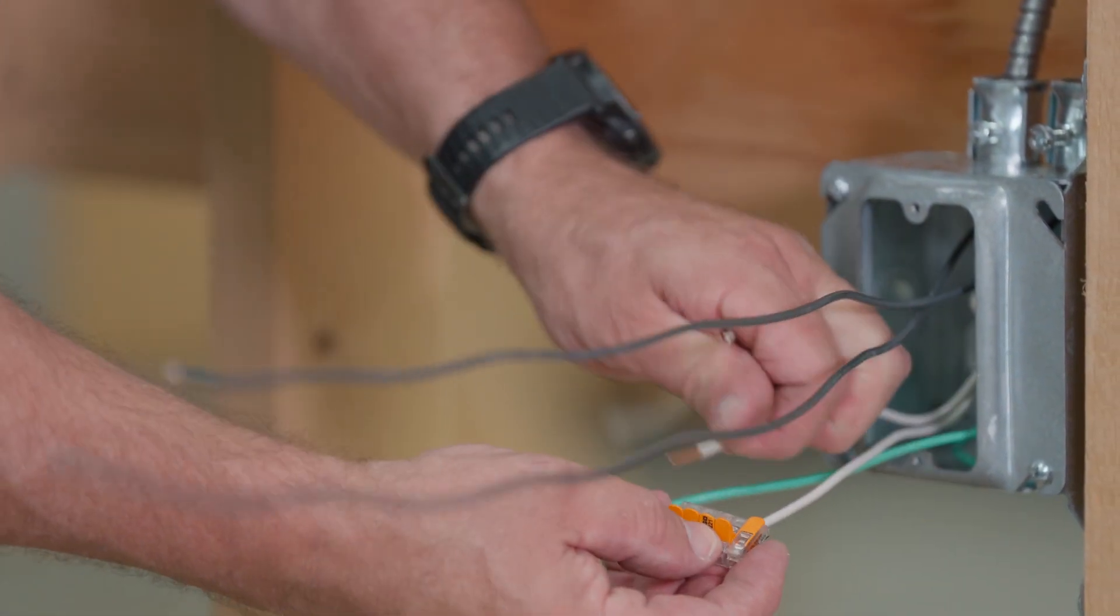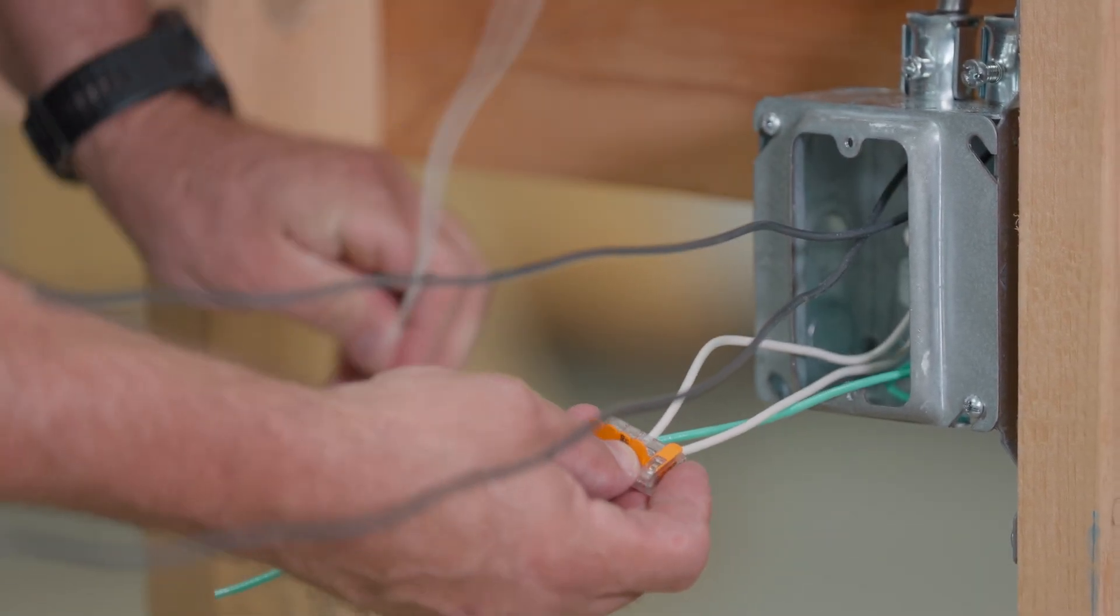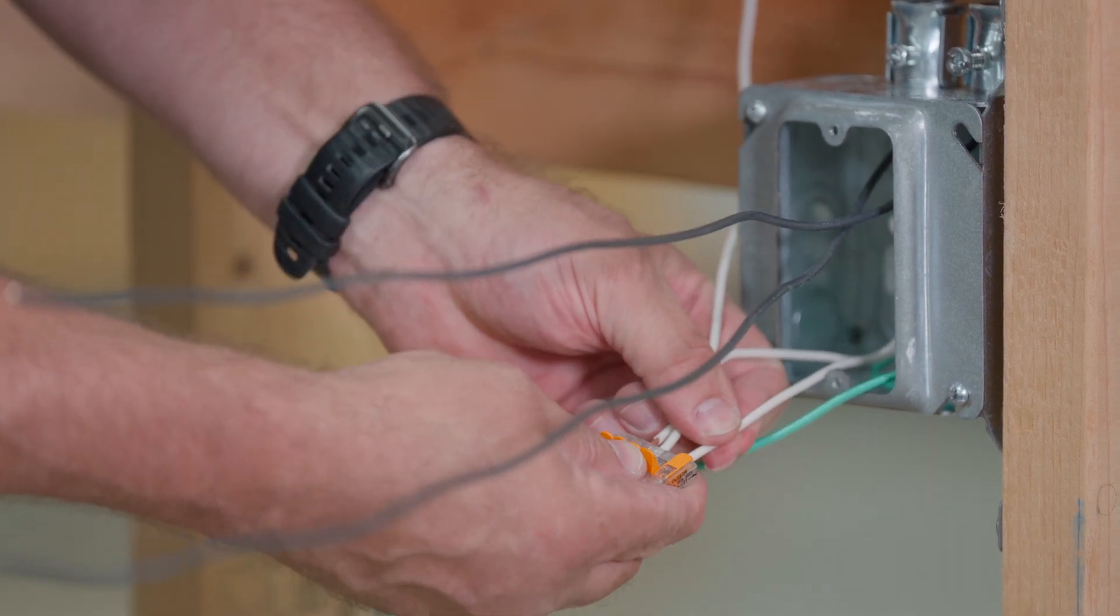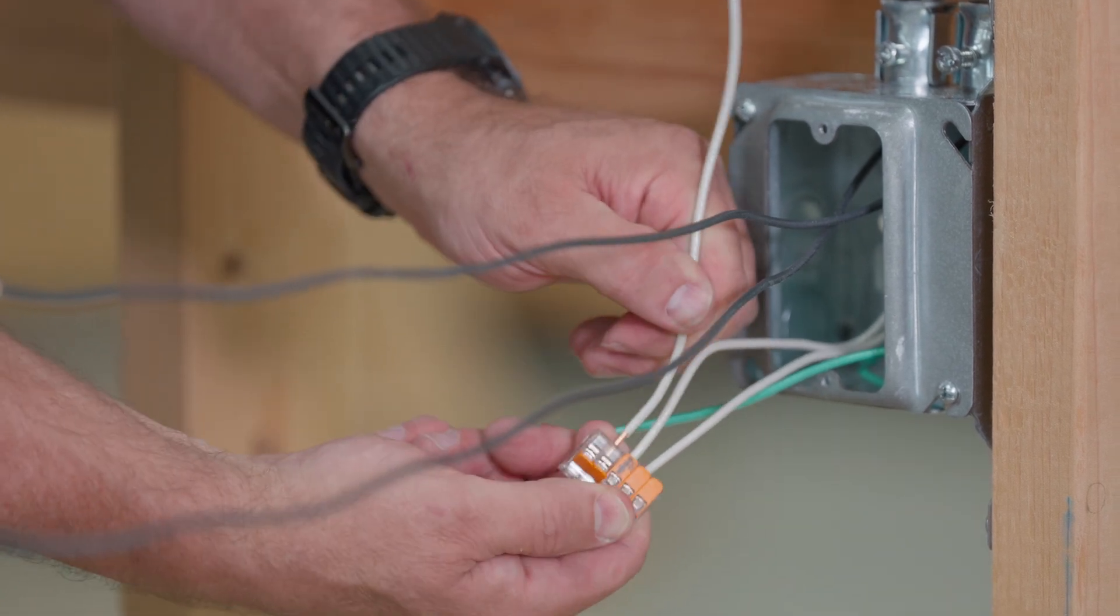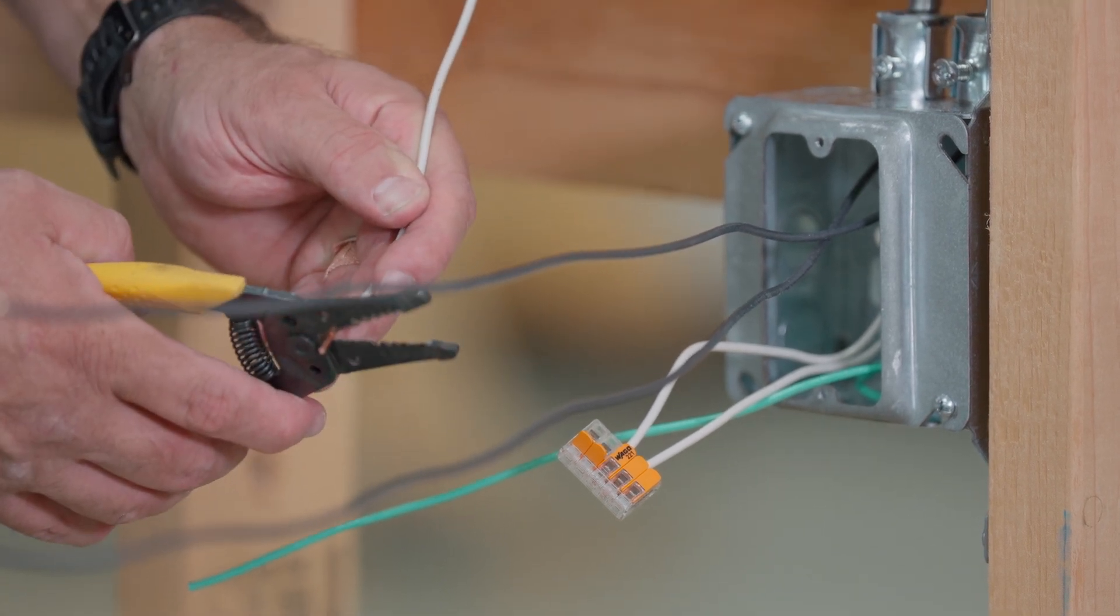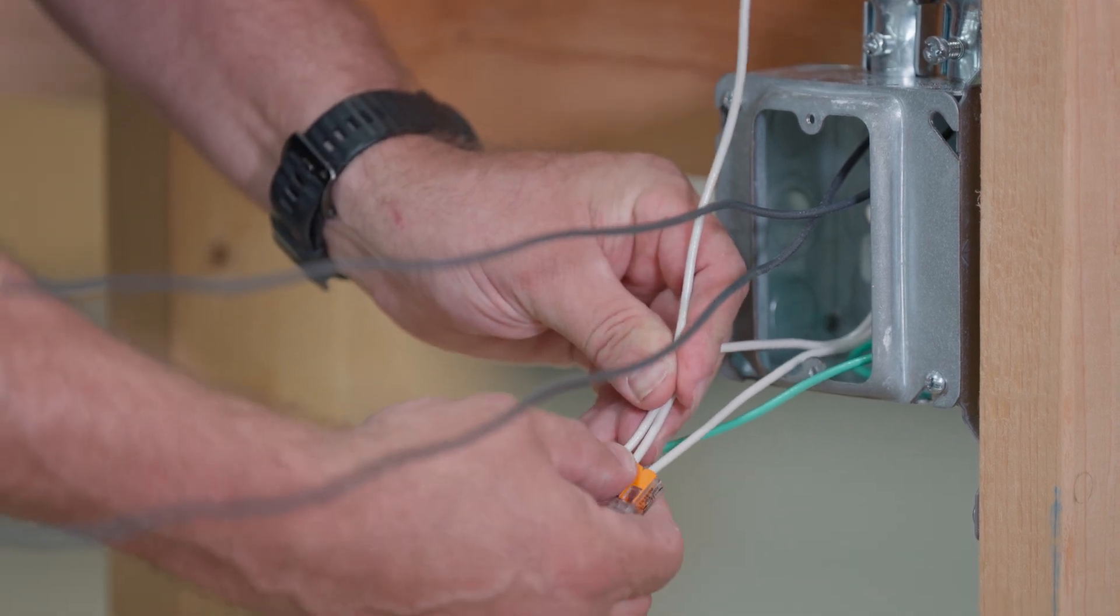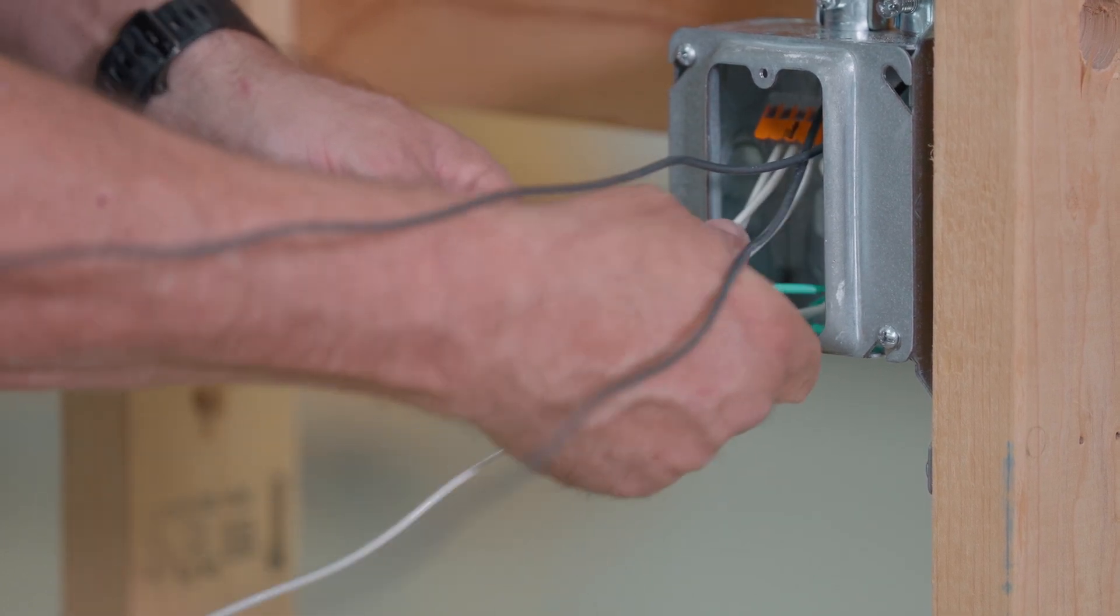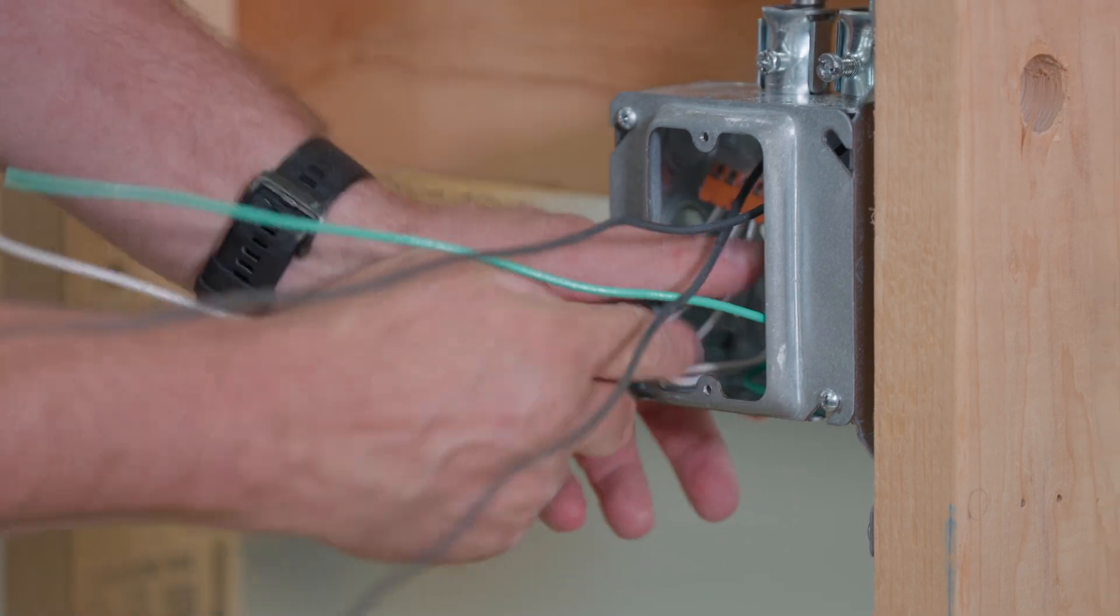And then we're going to get another push-in connector here. We're going to push this. Make sure all these wires go all the way in. Make sure that when you put it in there, you don't take too much strip off the wire. There's too much wire here. That was stripped too long. You don't want any wire showing when it's inside this. We want it to all be inside. Now they're all nice and tight. So we'll fold this also to the back of the box. Let's put it all the way to the back.